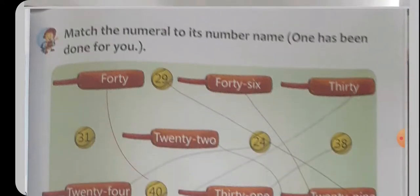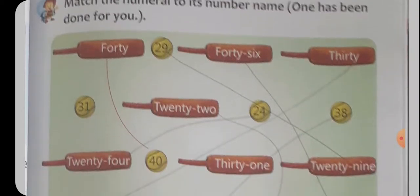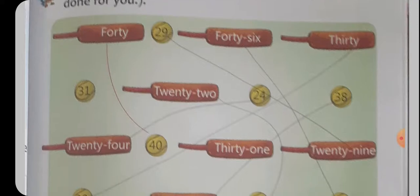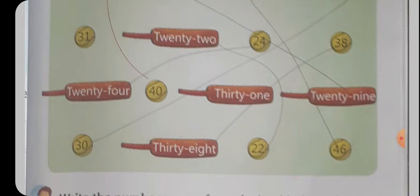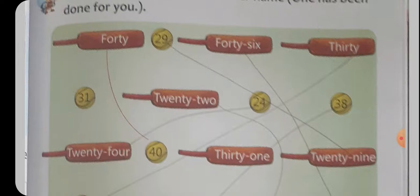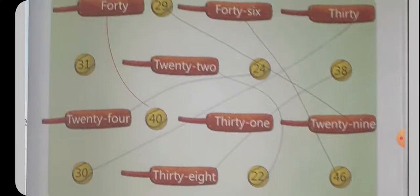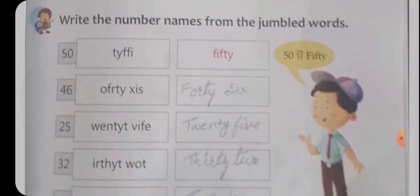Next है आपका Match the Number to its Number Name। यह जो Numbers दे रहे हैं इसको Match करना है इस Number's Name से। 29 है तो 29 — just नीचे 29 से Match कर दो। यह T-W-E-N-T-Y N-I-N-E, 29। ऐसे दे रहा है यह 40 — F-O-R-T-Y, 40 से Match हो रहा है। ऐसे 46 — 46 कहाँ पर है, यह just नीचे 46 Number से Match कर दिया। फिर है 30 — 30 Number से Match कर दिया। ऐसे ही यह आपका 22 — 22 से Match कर दो। 24 से Match कर दिया और 38 से। Match करने हैं उनको Numbers के Number Name से।